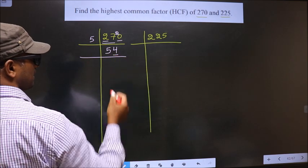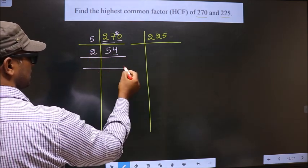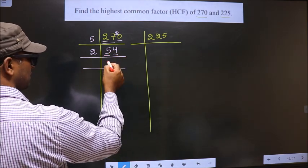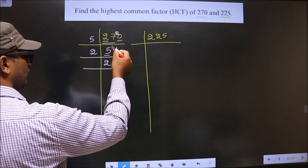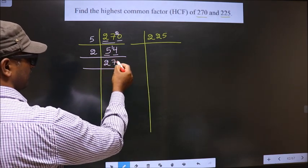Now for this number, the last digit is 4, even, so we take 2 here. The first number is 5. A number close to 5 in the 2 table is 2 times 2, which is 4. 5 minus 4 is 1, carried forward making it 14. When do we get 14 in the 2 table? 2 times 7 is 14.